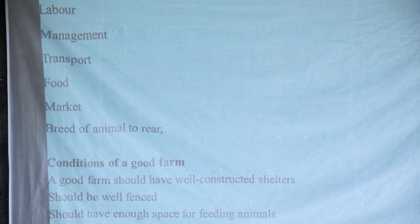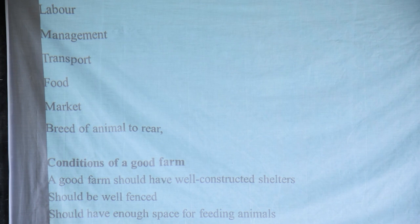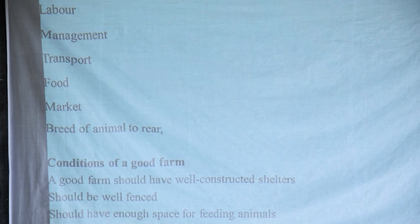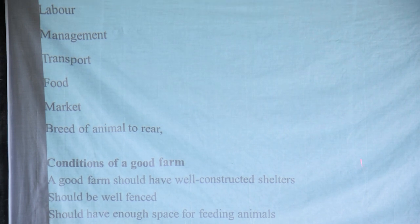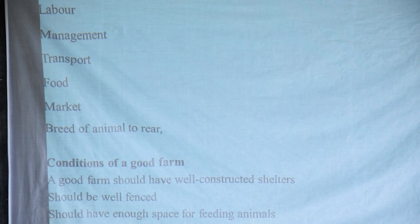Now we check the conditions of a good farm. We have looked at factors for starting a farm. Once you start a farm, you need to check how your farm should look. The qualities of a good farm: first, it should have well-constructed shelters and good housing — whether it's for cows or a chicken coop, think of the shelter.